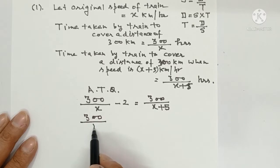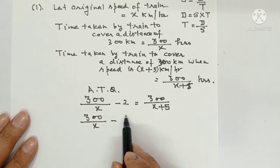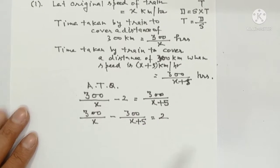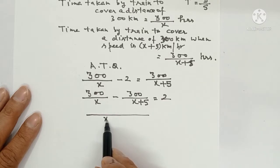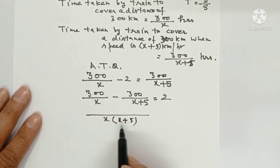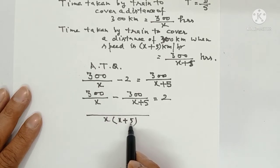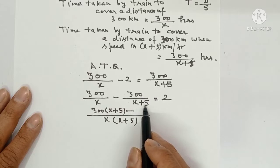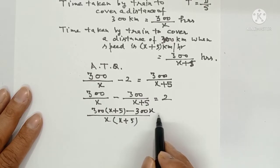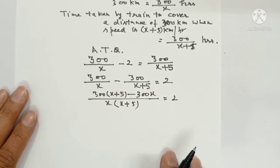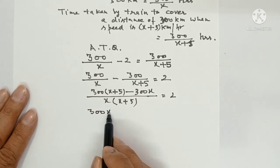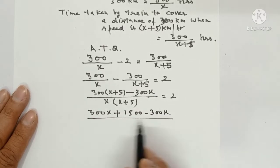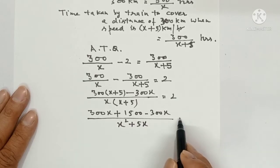Now what will you do? You will bring the terms to the left side. 300 upon x minus 300 upon x plus 5 equals 2. Now you need to take the LCM x into x plus 5. So 300 times x plus 5 minus 300 times x, upon x times x plus 5, equals 2. Now you will start opening the bracket. 300x plus 1500 minus 300x upon x square plus 5x equals 2.